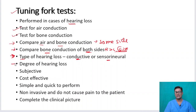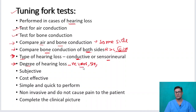In Rinne's test we get information about the degree of hearing loss. If it is negative with 256 Hz, if it is negative with 256 and 512 Hz, or if it is negative with 256, 512, and 1024 Hz — each tells us how much the hearing loss is.